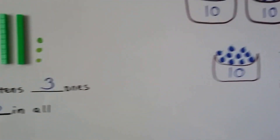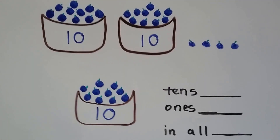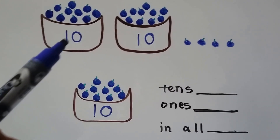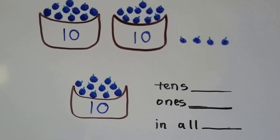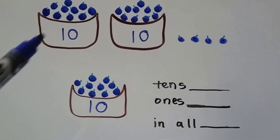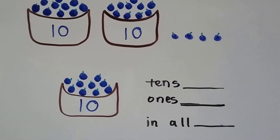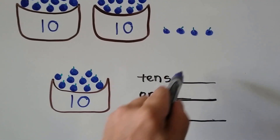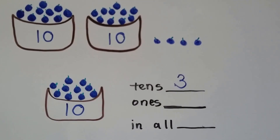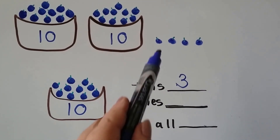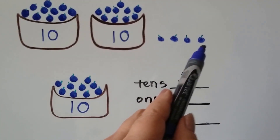Now we've got bowls of blueberries. Each bowl is ten blueberries. I see one, two, three tens. And how many ones do we see? One, two, three, four.